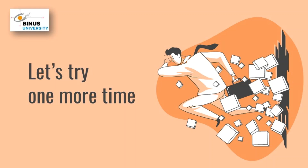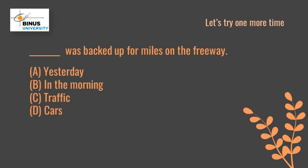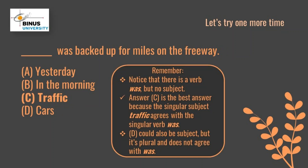The typical structure questions that you can find in TOEFL test is that either the sentence is missing a subject or verb, or even the sentence has extra subject or verb. Here is another example from TOEFL test. Can you guess which answer is correct? Notice that there is a verb, was, but there is no subject. Answer C is the best answer because the singular subject, traffic, agrees with the singular verb, was. Well, D could also be the subject, but it's plural and does not agree with was.